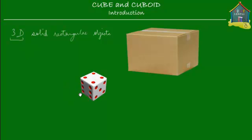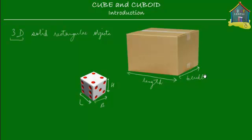So a cube has a length, it's got a breadth, and it's got a height — length, breadth, and height. And so does a cuboid. It's got a length, a breadth also called the width, and a height, which is also sometimes called the depth. So 3D is three-dimensional: length, breadth, and height.